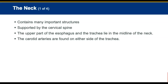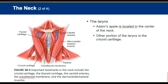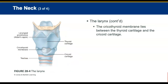The neck contains many important structures. Supported by the cervical spine, the first seven vertebrae are C1 through C7. The spinal cord exits from the foramen magnum and lies within the spinal canal formed by the vertebrae. The upper part of the esophagus and trachea lie in the midline of the neck. The carotid arteries are found on either side of the trachea, along with the jugular veins and several nerves. The larynx, which is the Adam's apple, is located in the center of the anterior neck. The other portion of the larynx is the cricoid cartilage, a firm ridge of cartilage below the thyroid cartilage. The cricothyroid membrane lies between the thyroid cartilage and the cricoid cartilage.